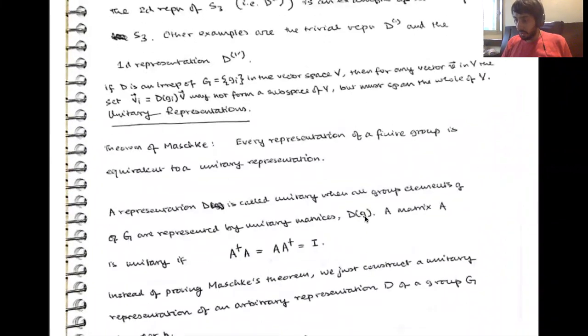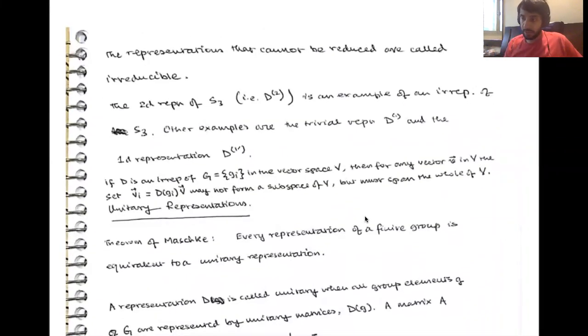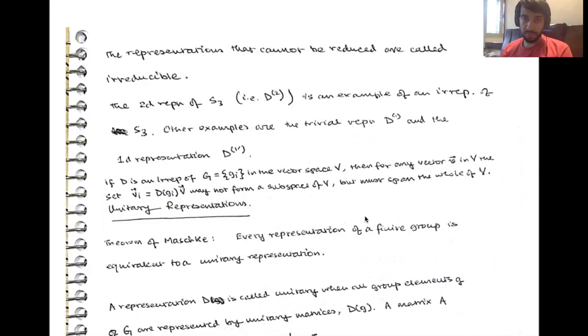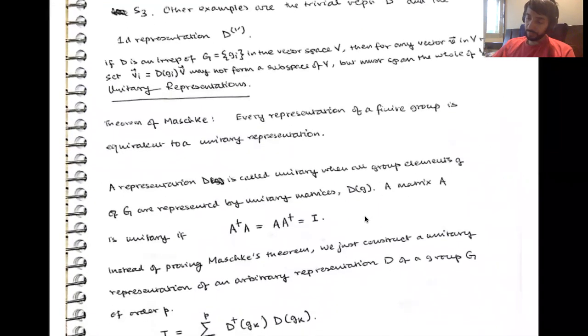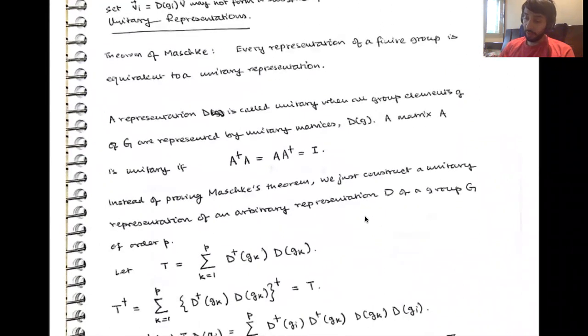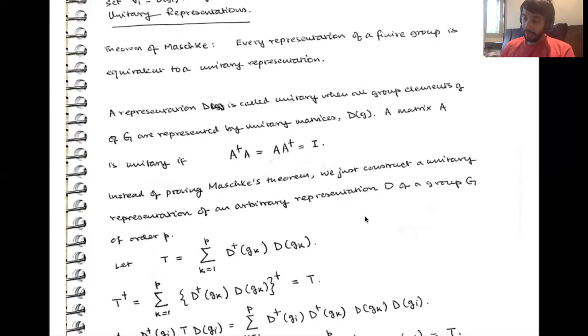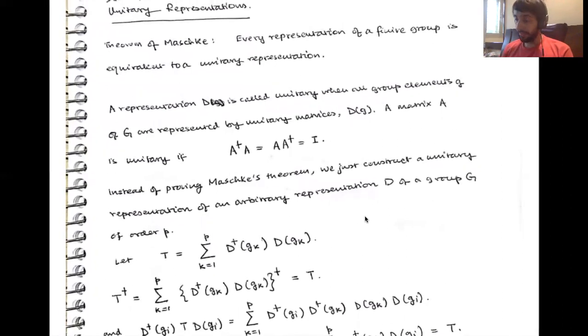That was reducible representations. The representations that cannot be reduced are called irreducible. For example, this two-dimensional representation of S3 that we were looking at is an example of an irreducible representation. The trivial representation is also an example of an irreducible representation. Now we'll be interested in unitary representations. There's a theorem by Maschke which says that every representation of a finite group is equivalent to a unitary representation.